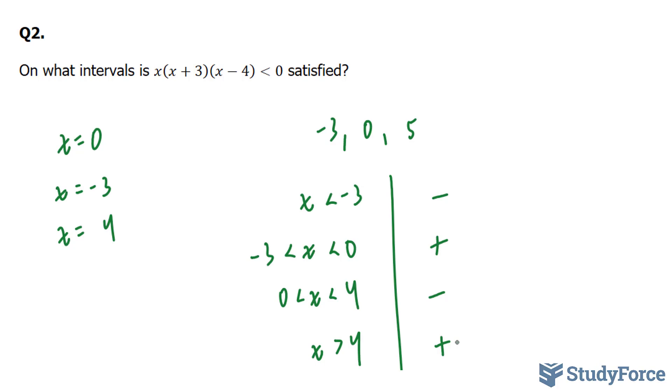So they're asking us, when is this equation less than 0? Well, it's less than 0 when you have anything less than -3 and anything between 0 and 4.